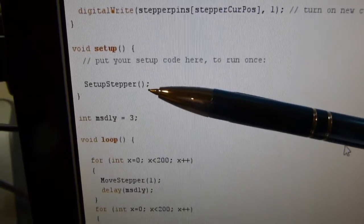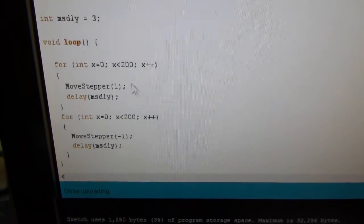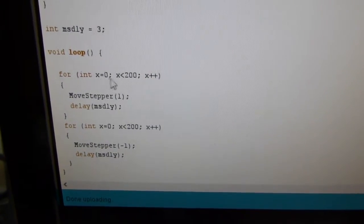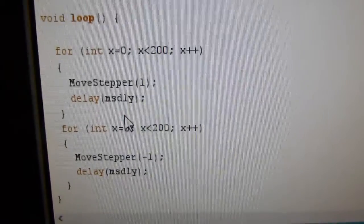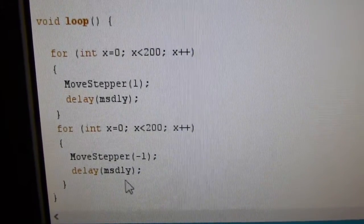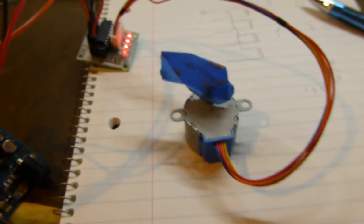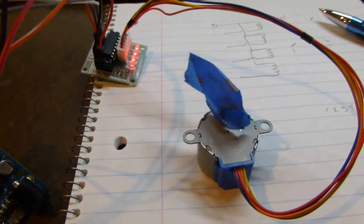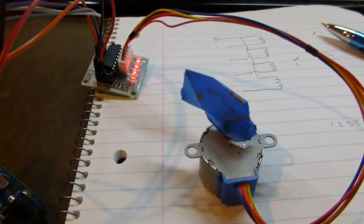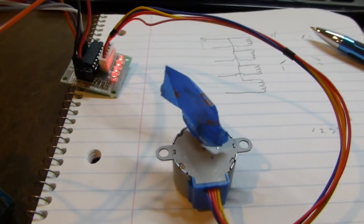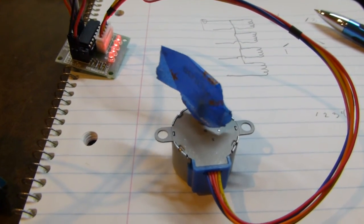And then all we have to do is just call SetupStepper. And then down below here I have—this is just going 200 steps in one direction with a delay in there, and then 200 steps in the other direction with a delay in there. And I've compiled that and uploaded it, and here you see it running. This thing's got quite a few steps per revolution, I guess, since that's 200 steps. So anyway, that's one of the little things you can do with it.